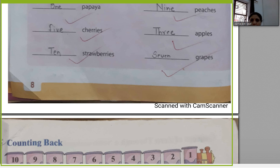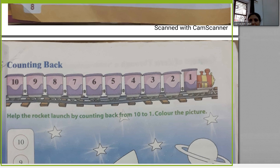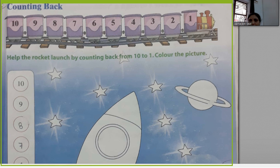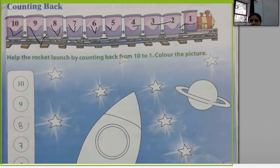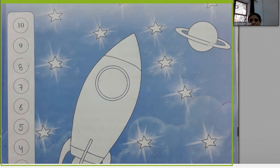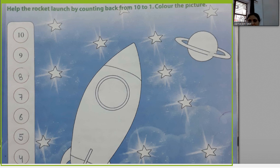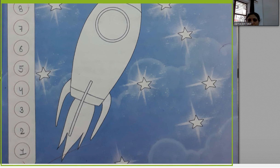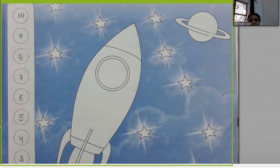Open the next page. After this, sit down and complete the work in your copy. Now, counting back — backward counting. Read with me: 10, 9, 8, 7, 6, 5, 4, 3, 2, 1. This is backward counting. Help the rocket launch by counting from 10 to 1 and color the picture.